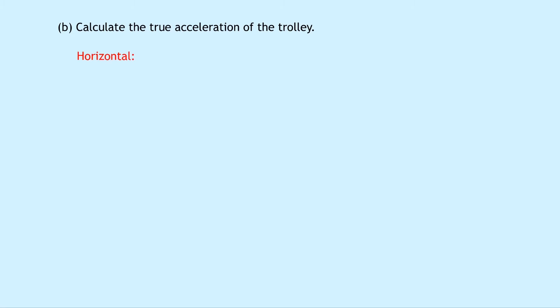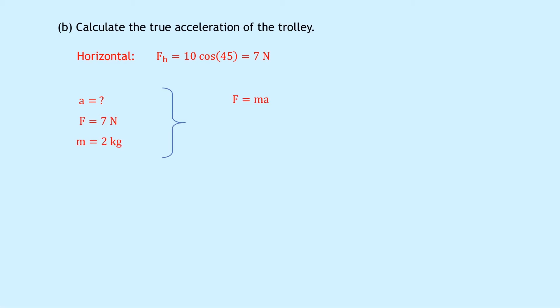For part B, calculate the true acceleration of the trolley. We find the horizontal component first: FH equals 10 cos 45, which equals 7 newtons. Writing down what we know: we're finding A, the horizontal force is 7 newtons, and the mass is 2 kilograms. Newton's second law gives F equals MA, rearranging to A equals F over M. Substituting in: 7 divided by 2 gives a final answer of 3.5 meters per second squared.